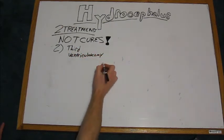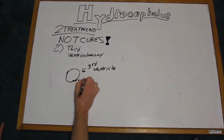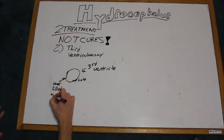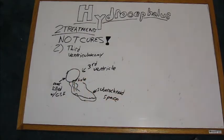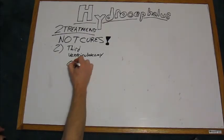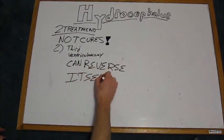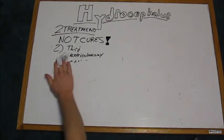The other form of treatment is a third ventriculoscomy. This is a surgical procedure where a hole is made in the base of the third ventricle to allow its CSF to flow to the subarachnoid space beneath the third ventricle and be reabsorbed. The downside to this treatment is that it can reverse itself, usually within five years.